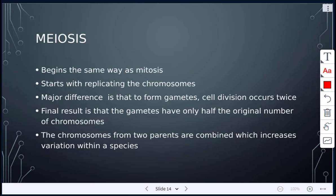Meiosis begins the same way as mitosis — it starts with replicating the chromosomes. But the major difference is that to form gametes, cell division has to occur twice. The final result is that gametes will have only half the original number of chromosomes. Also in meiosis, the chromosomes from the two parents combine, which increases genetic variation within the species. These will not be identical copies like we saw in mitosis.